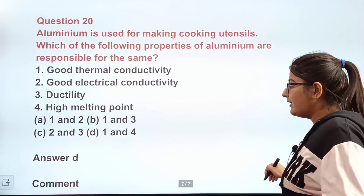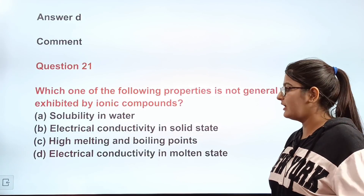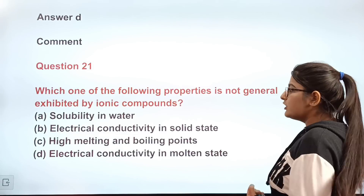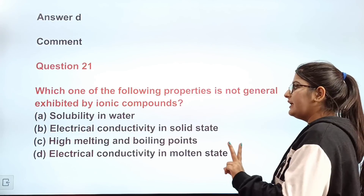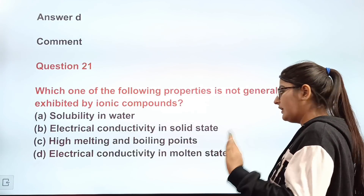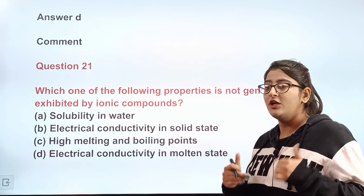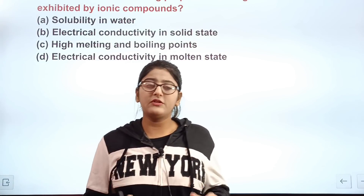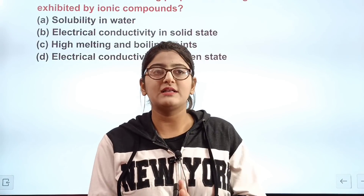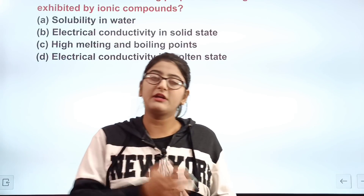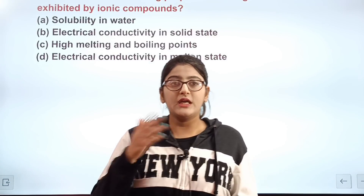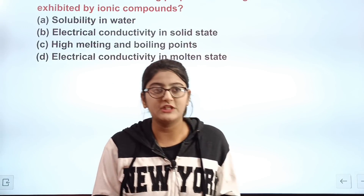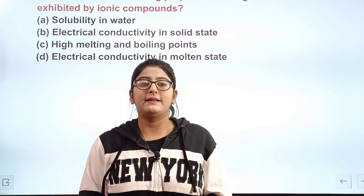As a tradition, the 21st question is for you to answer in the comments: which of the following property is not generally exhibited by ionic compounds? A) solubility in water; B) electric conductivity in solid state; C) high melting and boiling points; D) electrical conductivity in molten state. Do tell me the correct answer in the comments. I hope this quick revision of important MCQ questions for Class 10 Science, Metals and Non-Metals, was helpful. Best of luck for your science exam — check the description box for full playlists, and I'll meet you in the next video!